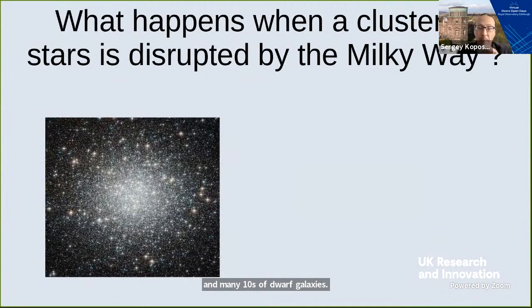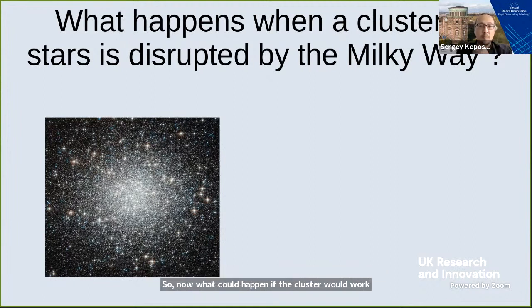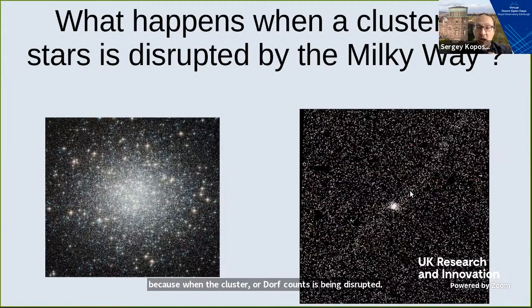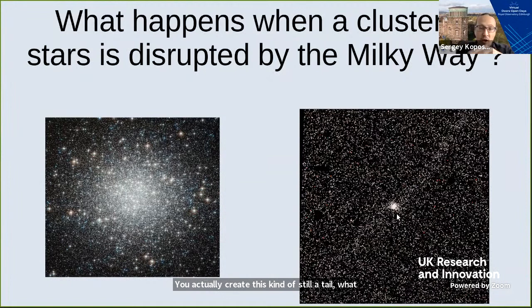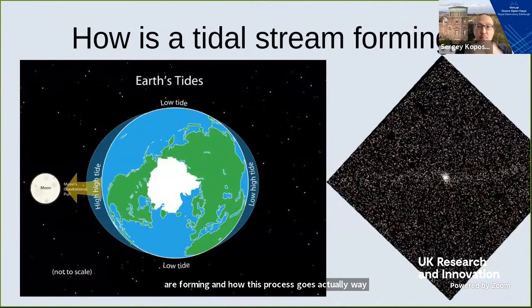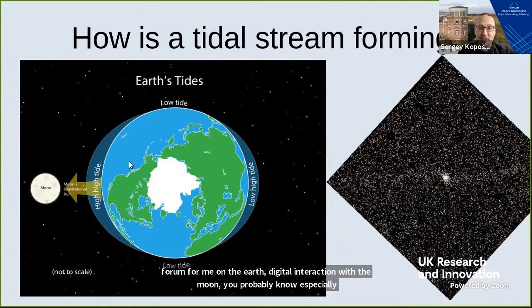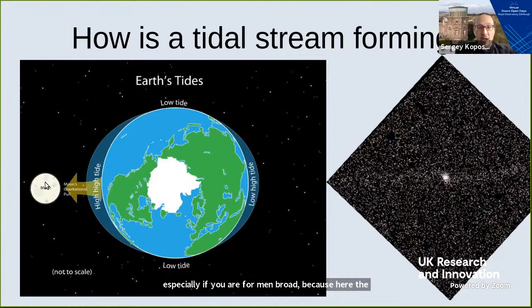What could happen if a cluster or dwarf galaxy is being disrupted by the Milky Way? This is actually quite an interesting process because when the cluster or dwarf galaxy is being disrupted, it creates a stellar tail or trail — one part of the tail leads the cluster and one trails it. To understand why these tidal tails or tidal streams are forming, I want to go back to our Earth and remember how the tides are forming due to interaction with the Moon.